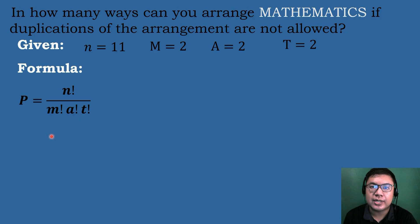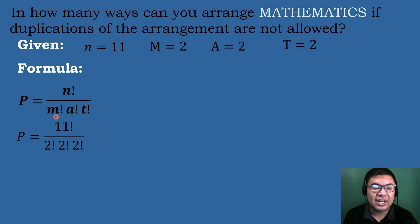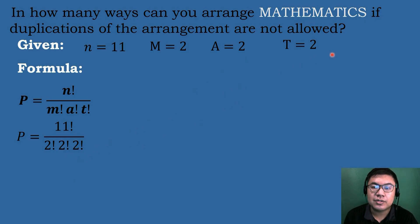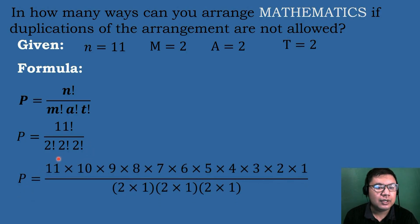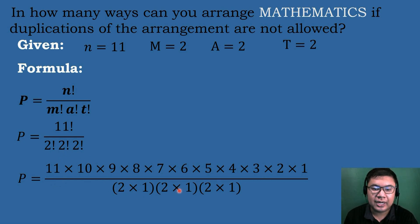Substituting the values: P equals 11 factorial over 2 factorial times 2 factorial times 2 factorial. We simplify: 11 factorial equals 39,916,800. Each 2 factorial equals 2 times 1, so 2 times 2 times 2 equals 8.